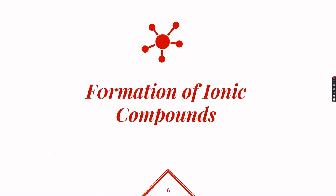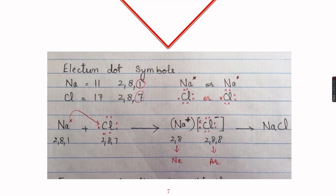Before learning the formation of ionic compounds, we need to know electron dot symbols. Sodium has one valence electron, so we write the symbol of sodium and show one valence electron as a cross or dot. Chlorine has seven valence electrons, so we write the symbol of chlorine and show seven valence electrons as seven dots or crosses.